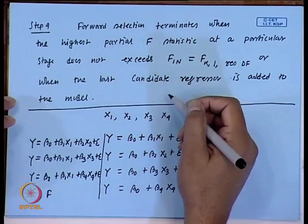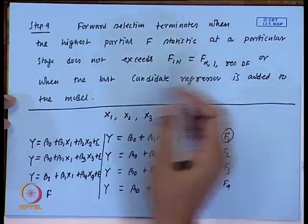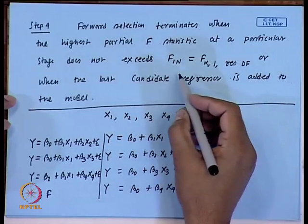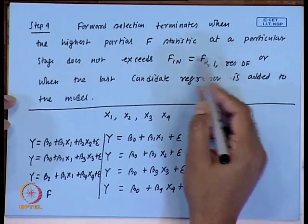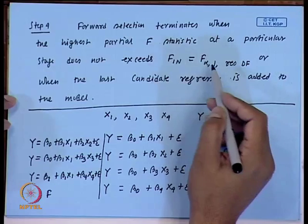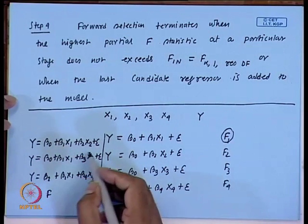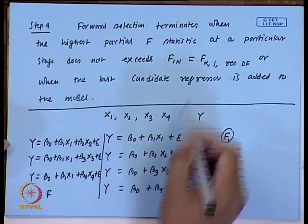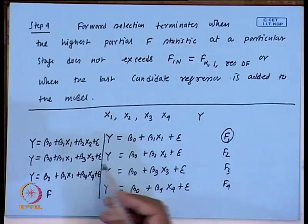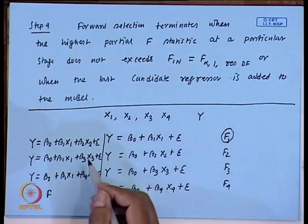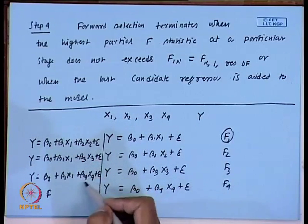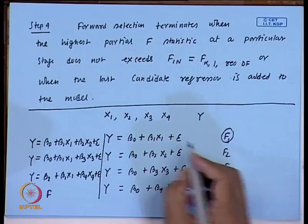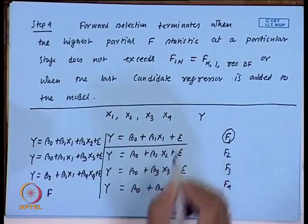The stopping criteria says forward selection terminates when the highest partial F statistic at a particular stage does not exceed the threshold value. If the partial F value is not greater than the threshold value, then x1 is enough for the model — you do not need to include any other regressor. So we stop there and the final model will be that one.